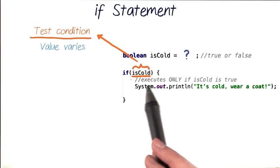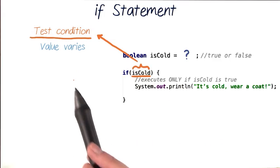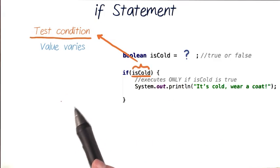This variable value, isCold, is something called a test condition. Because its value varies to tell us if it is or isn't cold, and we have to test it to determine its value.